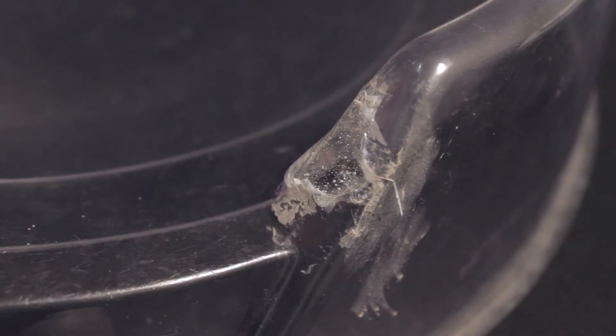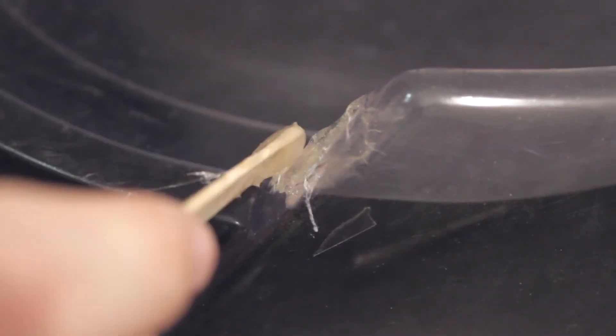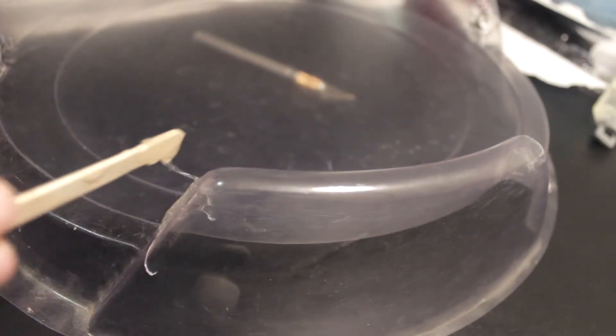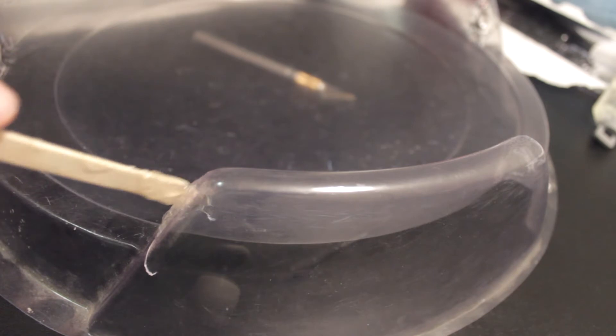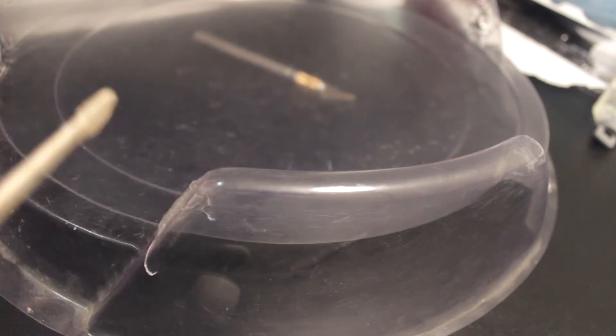You can see I already did one layer, but essentially you just take a little popsicle stick or something—it comes with an application stick in the package—and you just apply it over the taped region or apply it over the layer that you had before. Some things I've noticed is that if you apply a lot on at one time, it tends to run down the stadium, so you kind of have to move it or hold it in place.